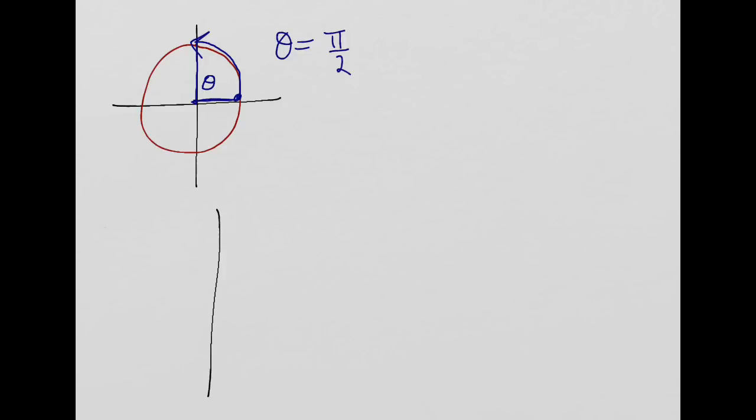Similarly, if I started my standard position there, I revolved all the way around until I got down to there, so my angle theta is actually that entire distance. Well, how far did I go? Again, from our previous section, 3 pi over 2.